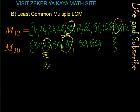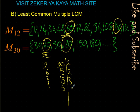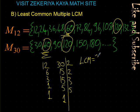How can we find the least common multiple? We use the same method as for GCF. Write 12 and 30 next to each other. Divide by 2: 12 gives 6, 30 gives 15. Continue with 2: 6 gives 3, 15 divided by 2 — we cannot. Move to 3: 3 divided by 3 is 1, 15 divided by 3 is 5. Finish with 5: 1 divided by 5 — we cannot, 5 divided by 5 is 1. The least common multiple is the product of all these prime divisors: 2 times 2 times 3 times 5 equals 60.